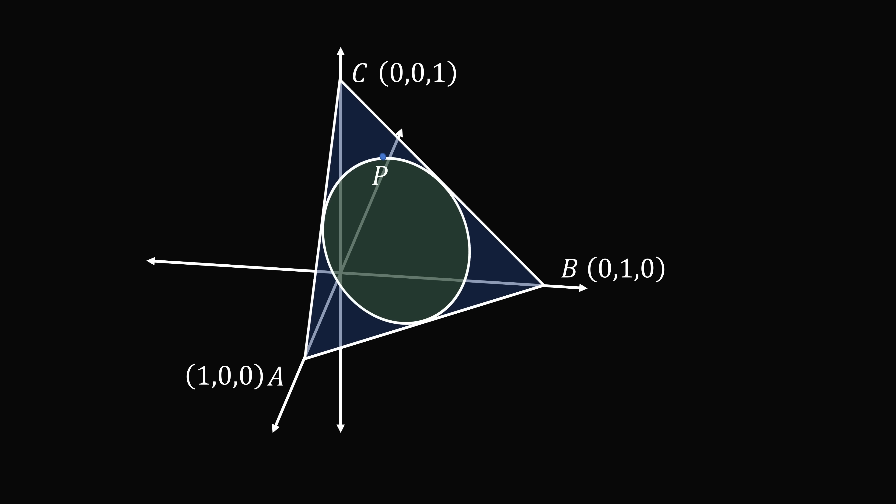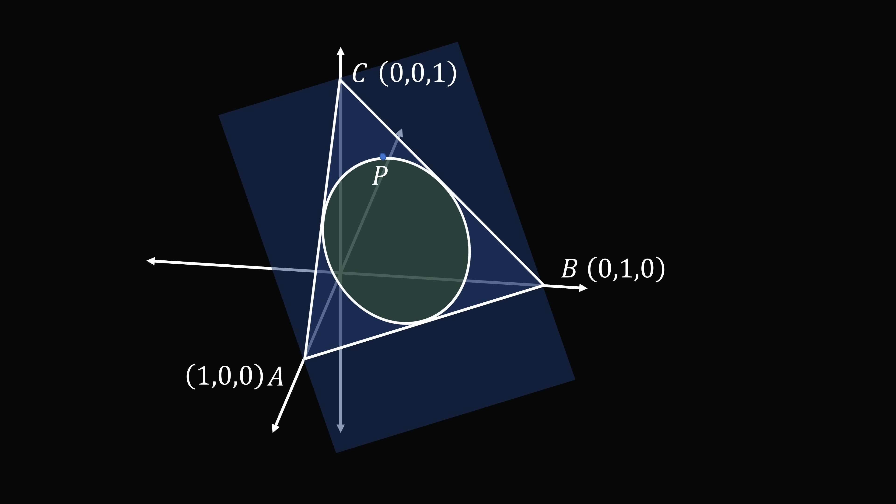Now, what is the equation of the plane that passes through the points A, B, and C? This is also easy to figure out. The equation is X plus Y plus Z equals 1. It's easy to check that the points A, B, and C satisfy this equation.